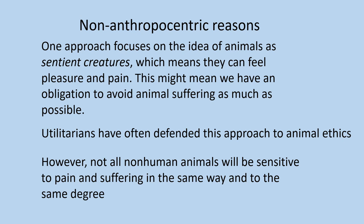Other general non-anthropocentric reasons focus on the idea of animals as sentient creatures — meaning they can feel pleasure and pain. This might mean we have an obligation to avoid animal suffering as much as possible, an approach identified with utilitarianism. Not all animals will be sensitive to pain and suffering in the same way and to the same degree, so we'd have to work out those differences in trying to think about animal sentience.